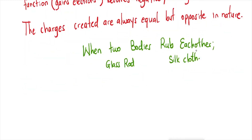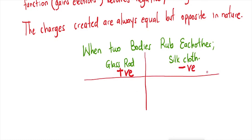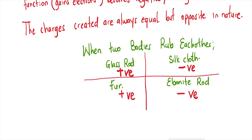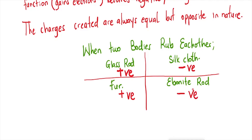To give some examples: if we take a glass rod and rub it with a silk cloth, the glass rod will turn out to be positively charged and the silk cloth will turn out to be negatively charged. Another example: when an ebonite rod is rubbed with fur, the fur will lose electrons and become positively charged, while the ebonite rod will become negatively charged.